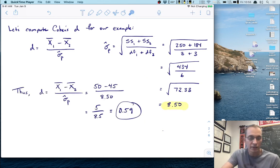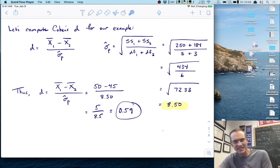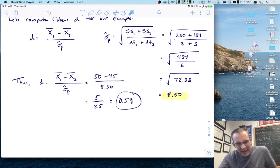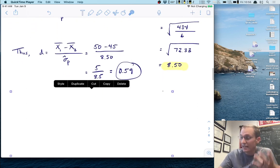Now we can finish Cohen's d: 50 minus 45 divided by 8.5, which is 5 over 8.5, about 0.59. The effect of the treatment is a little over half a standard deviation. Is that a big effect or a small effect? We need some guidelines here.